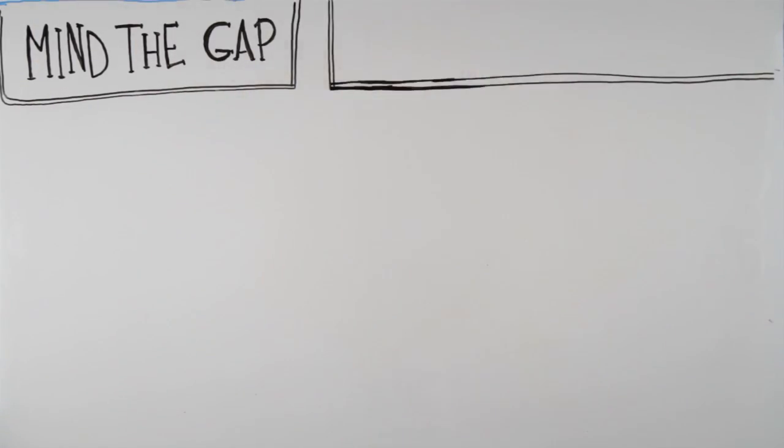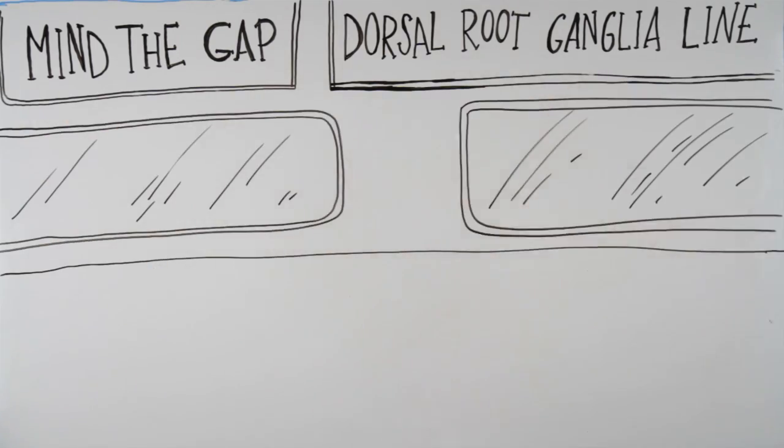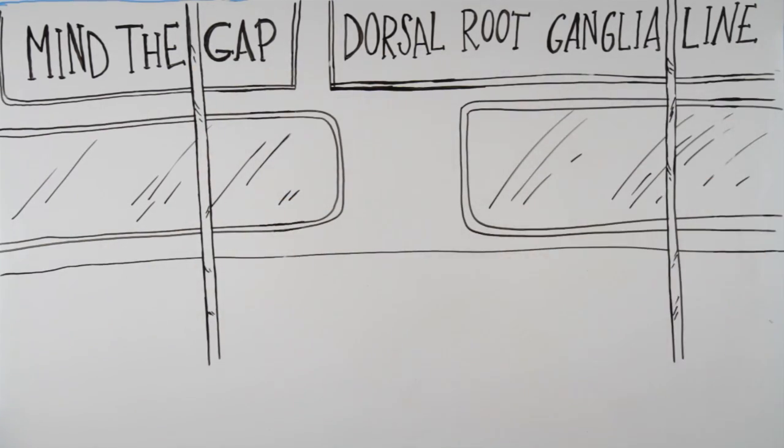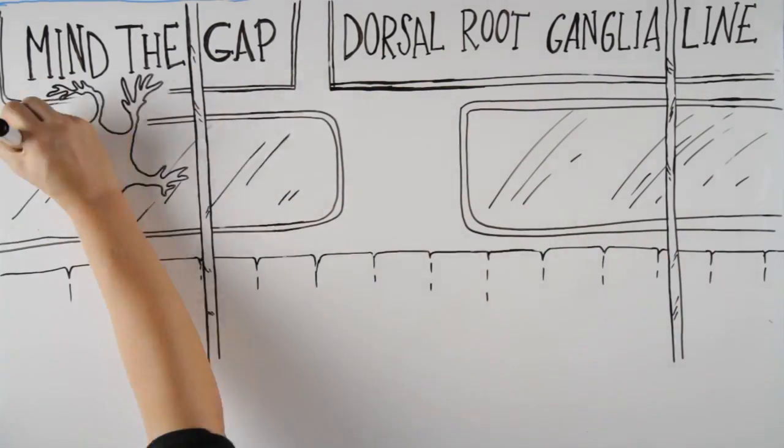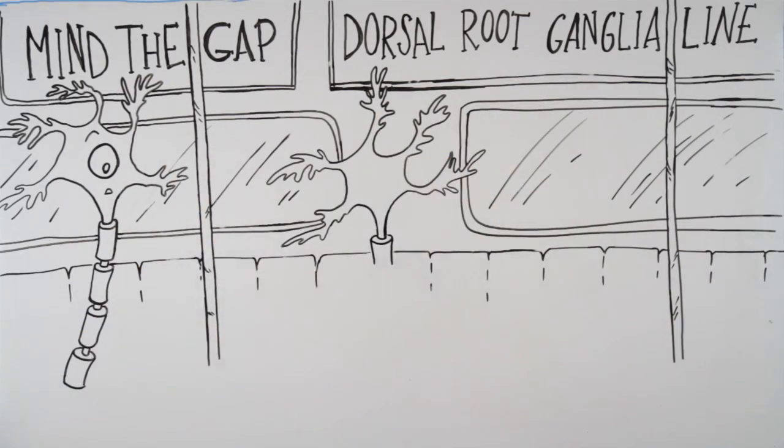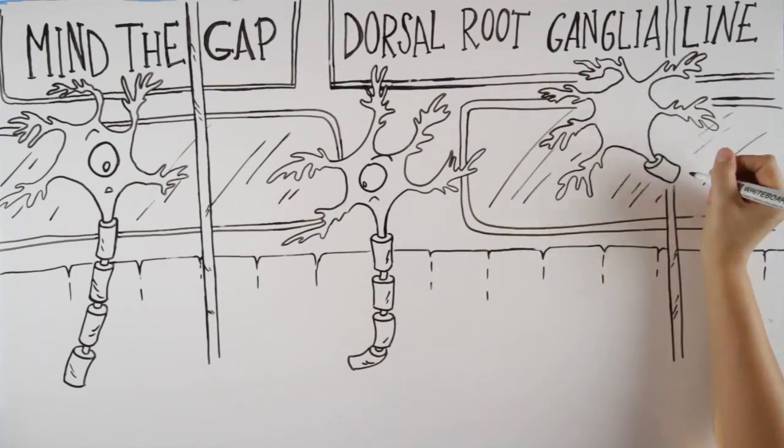Inside the dorsal root ganglia are thousands and thousands of cell bodies of the peripheral sensory neurons. As you can imagine, it is very crowded within this small area, almost like the London subway at 5pm.